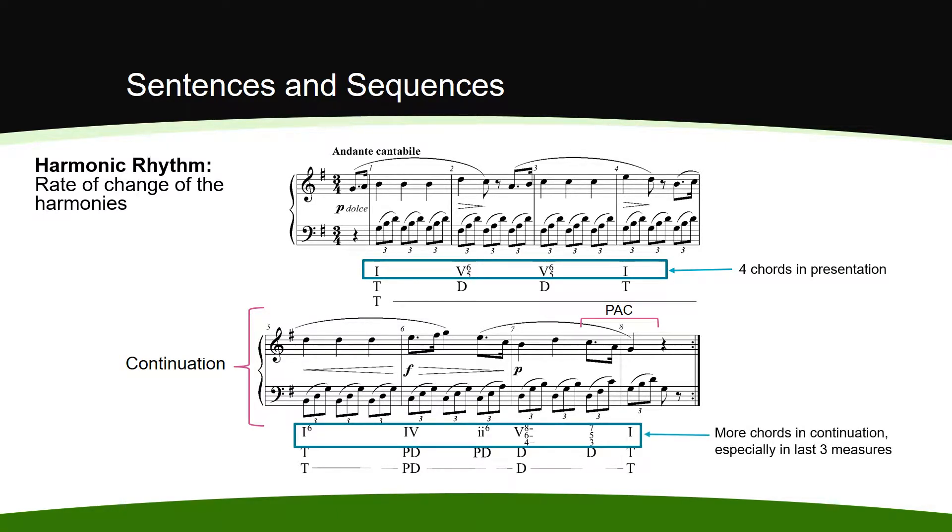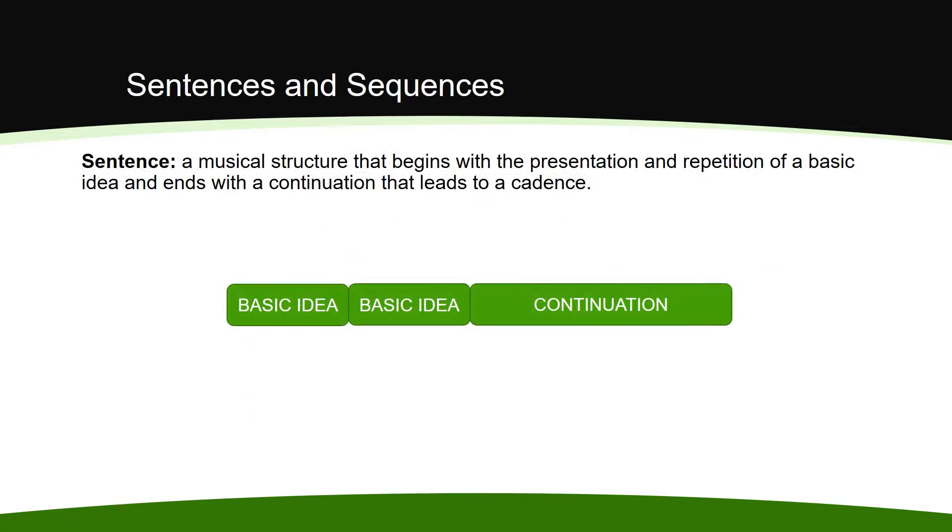The three parts of the sentence—the basic idea, the repetition of the basic idea, and the continuation—are normally in the proportions of one to one to two, or multiples thereof. If we multiply each of these numbers by two, we get a ratio of two to two to four, which gives us the most common eight-measure sentence structure.